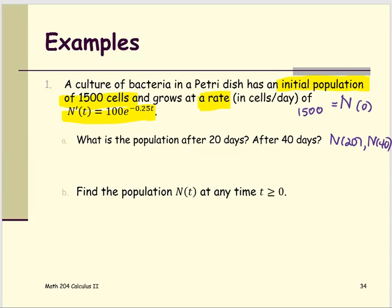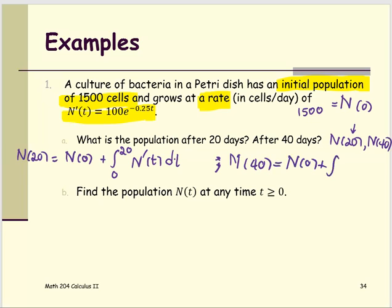For part A, what you can set up is: since we know exactly what T is, N at 20 equals N at zero or initial point of time plus the antiderivative from zero to 20. And for N at 40, same way: equals N at zero plus the integral from zero to 40 N prime at T with respect to T, if we apply the formula from the previous slide directly.